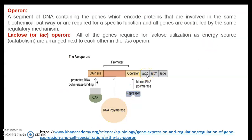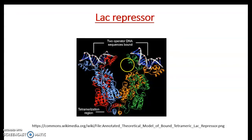In E. coli we will look at the mechanism of how the regulation of these three genes is managed. Preceding these three genes are regulatory regions: the operator region, where the repressor binds; the promoter region, where RNA polymerase binds and starts transcription; and the CAP (catabolite activator protein) binding site, where the activator comes and binds to enhance transcription.